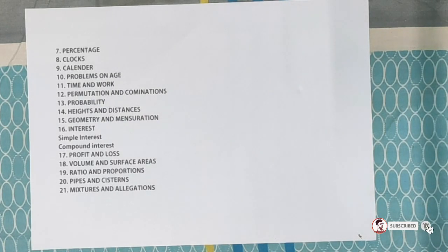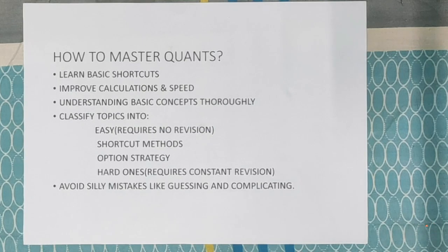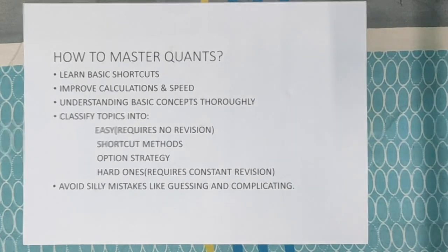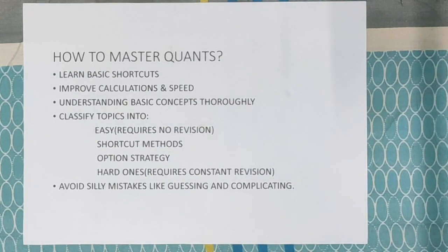I hope you have taken down notes. Next: how to master quants. There are four to five key points. If we are consistent with these, quantitative aptitude becomes easier. First thing is learning basic shortcuts. Second is to improve your calculations and speed — when you train your mind, your mind becomes the fastest calculator. Third, we need to categorize topics in order to prioritize.